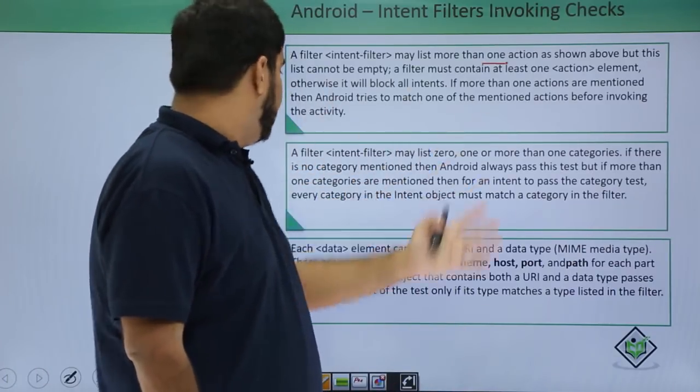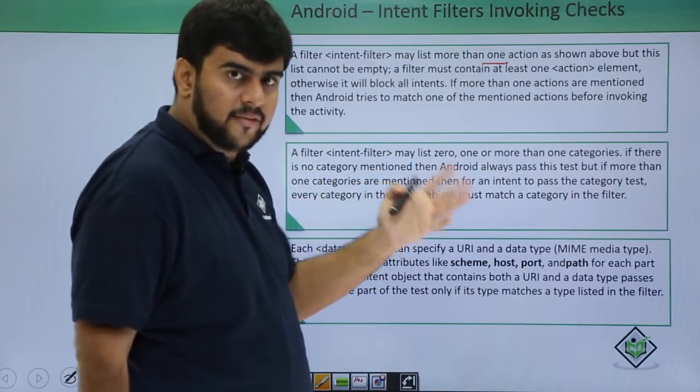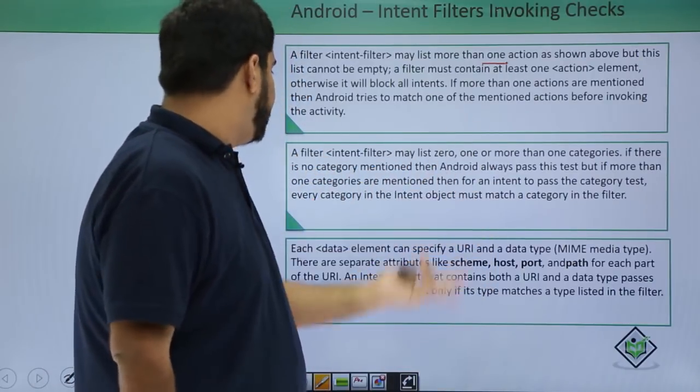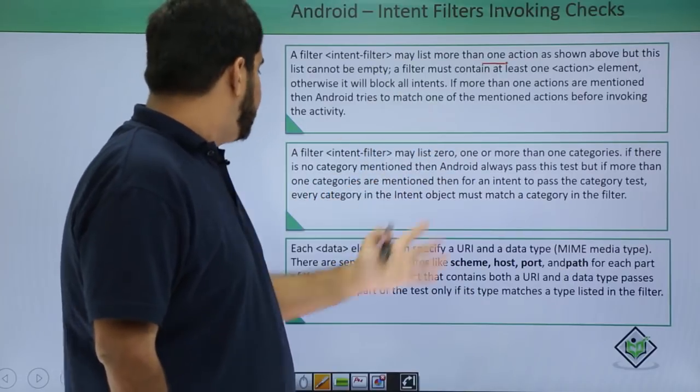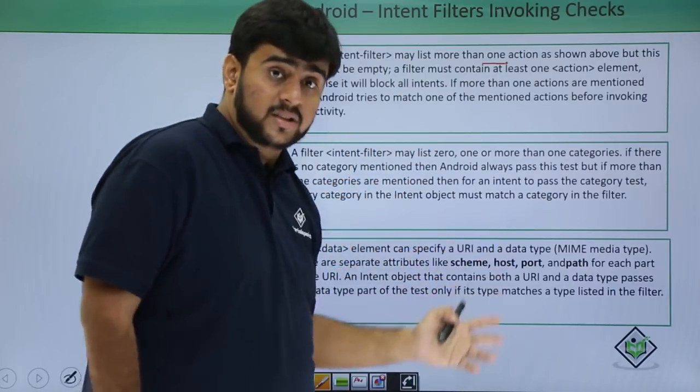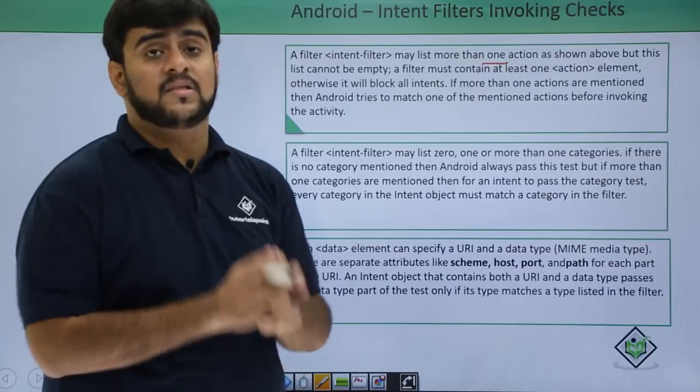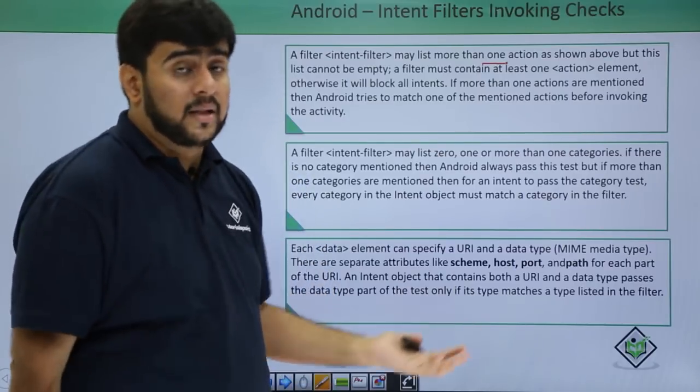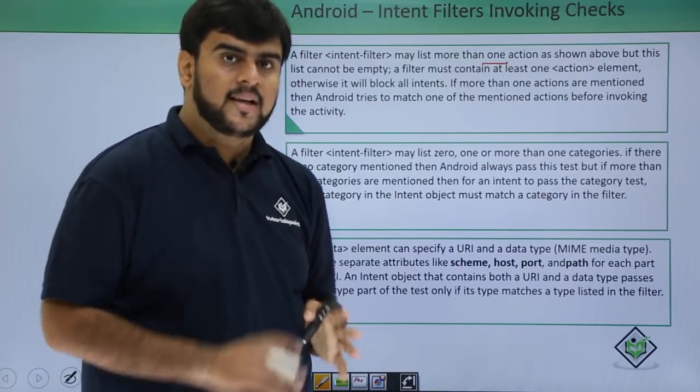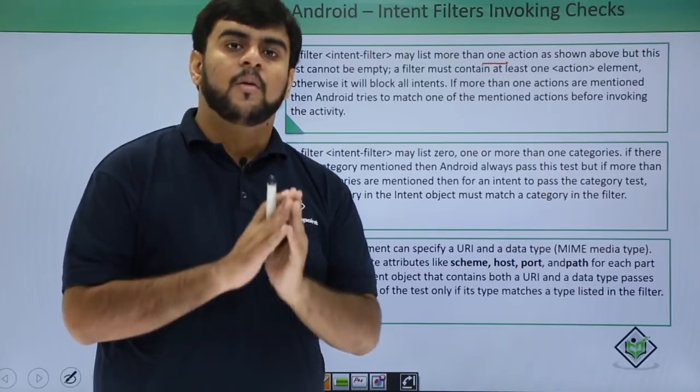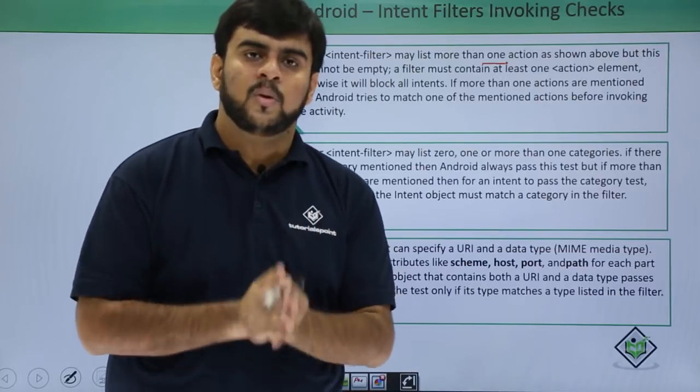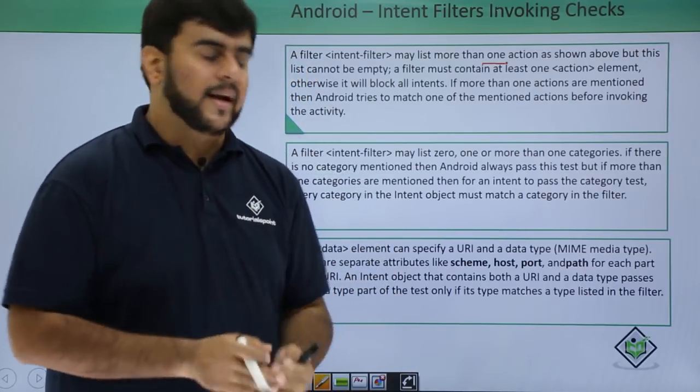Then the second one being the categories. In categories, if there are no categories then it's fine. But if there are more than one categories then every category must match. In the action even if one matches the action is taken up, but in the category if there are no categories it's fine it will execute. But if there are more than one then it has to match all the categories.